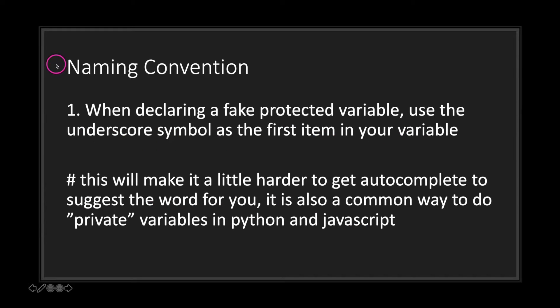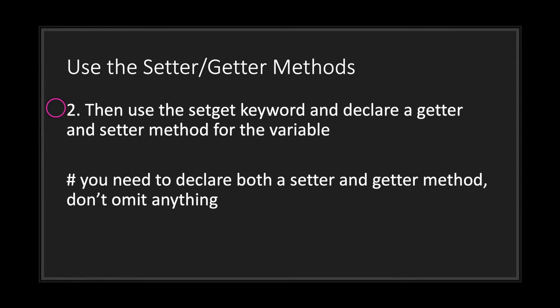There are three things we need to do. The first is our naming convention: when declaring a fake protected variable, use the underscore symbol as the first character in your variable name. This makes it harder for autocomplete to suggest your fake protected variable, and it's also a common convention for private variables in Python and JavaScript. Next, declare your variable with the set/get keyword.